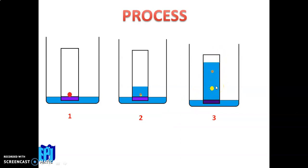If after developing the plate you get only two spots, the mixture consists of only two components. Some components are not visible to the naked eye, so visualization techniques are used. If components are visible to the naked eye under normal conditions, you can see all the spots directly.